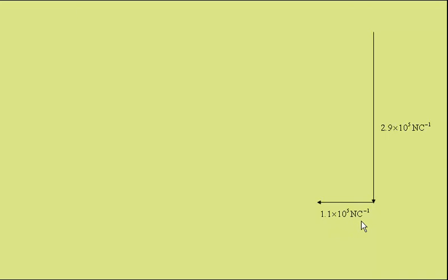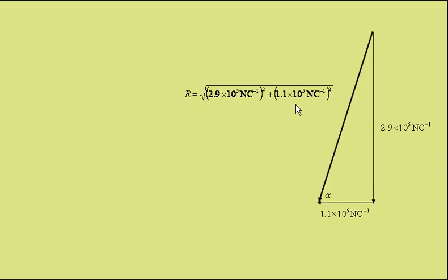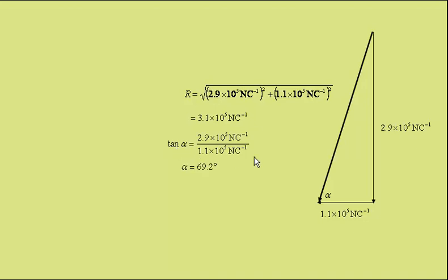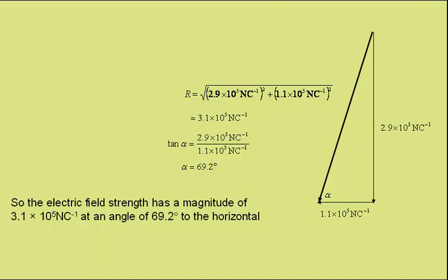Now we do a vector diagram with the vertical component being 2.9 times 10 to the 5 newtons per coulomb downward, and the horizontal component 1.1 times 10 to the 5 newtons per coulomb to the left. The resultant, found by Pythagoras, gives a magnitude of 3.1 times 10 to the 5 newtons per coulomb. Tan of alpha equals opposite over adjacent, giving alpha at 69.2 degrees. So the electric field strength at X has a magnitude of 3.1 times 10 to the 5 newtons per coulomb, at an angle of 69.2 degrees to the horizontal.